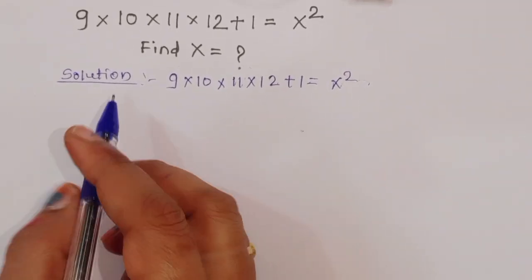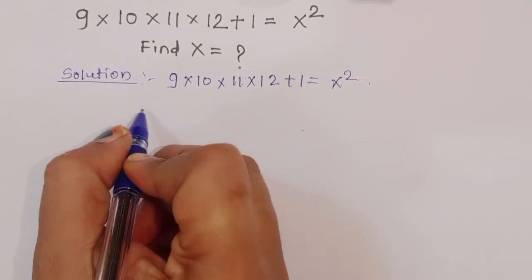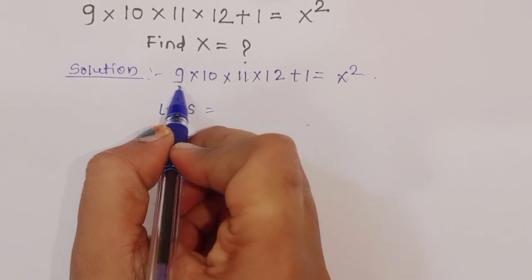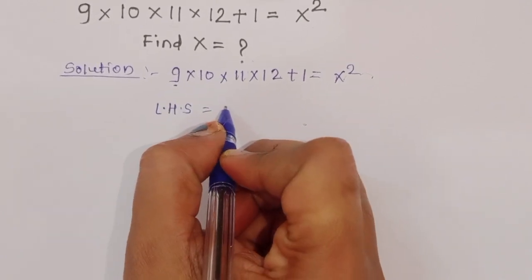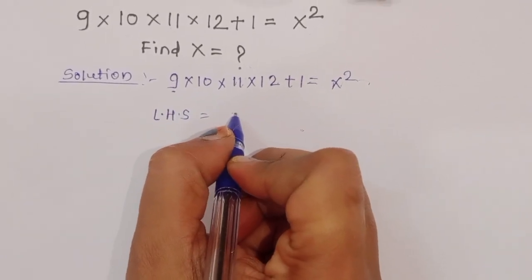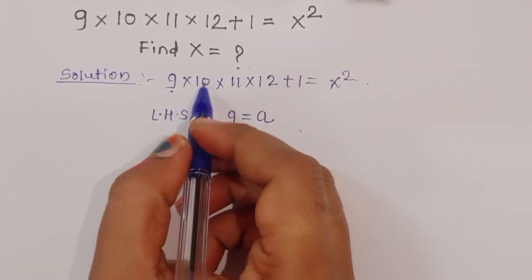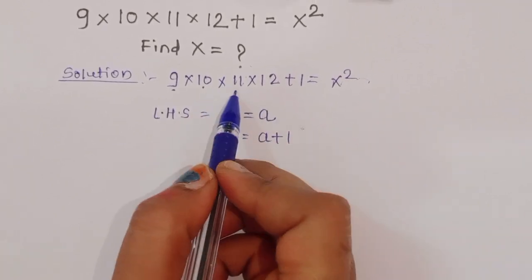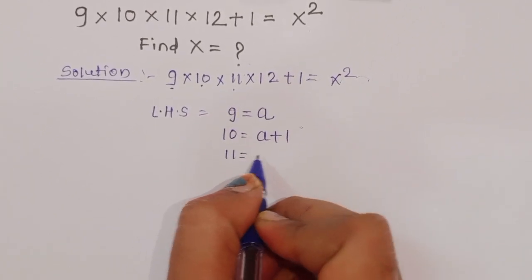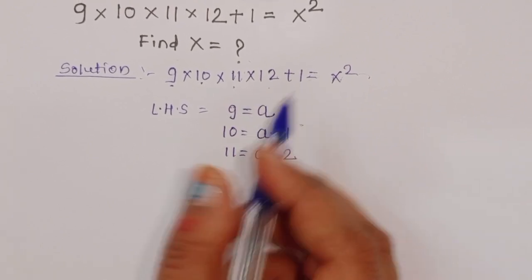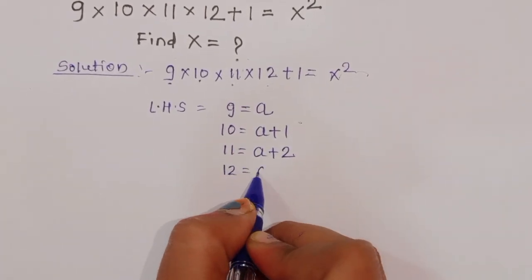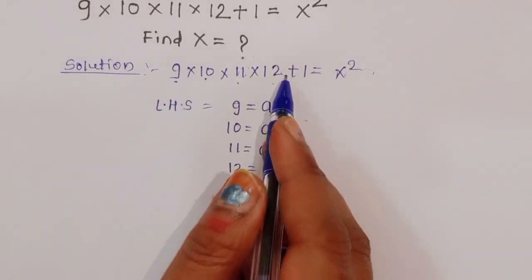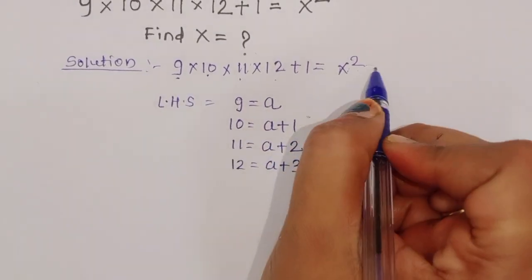Consider the left-hand side. We assume 9 is equal to a. Then 10 equals a plus 1, 11 equals a plus 2, and 12 equals a plus 3. Putting these values into the equation — this is equation 1.